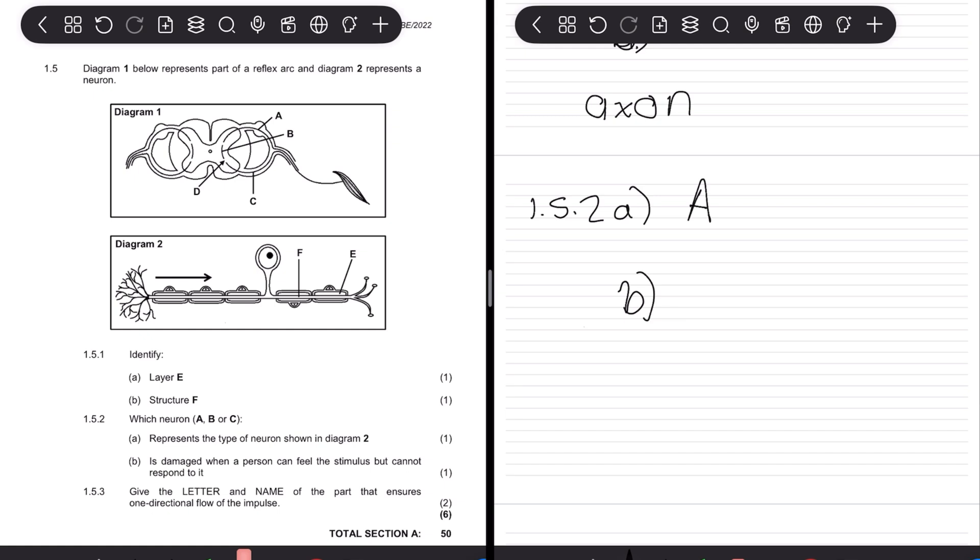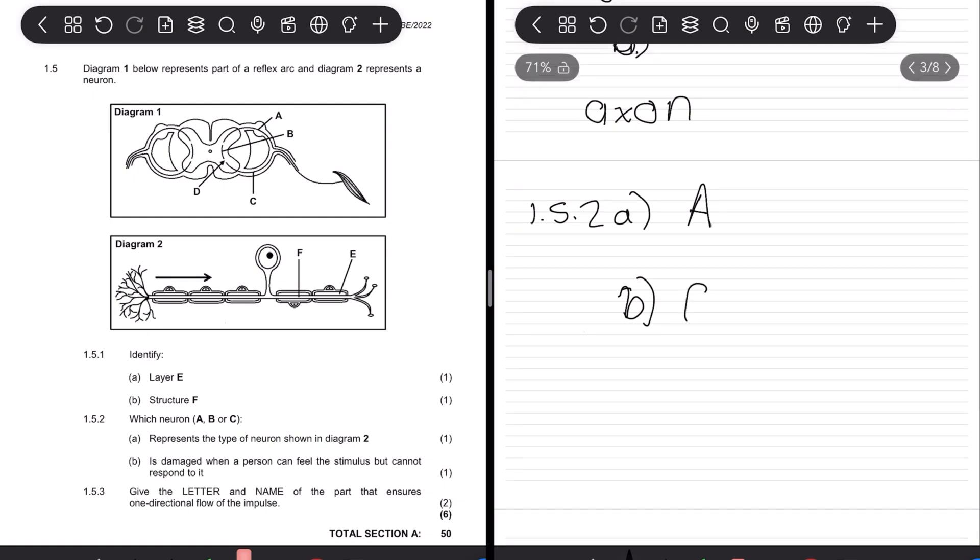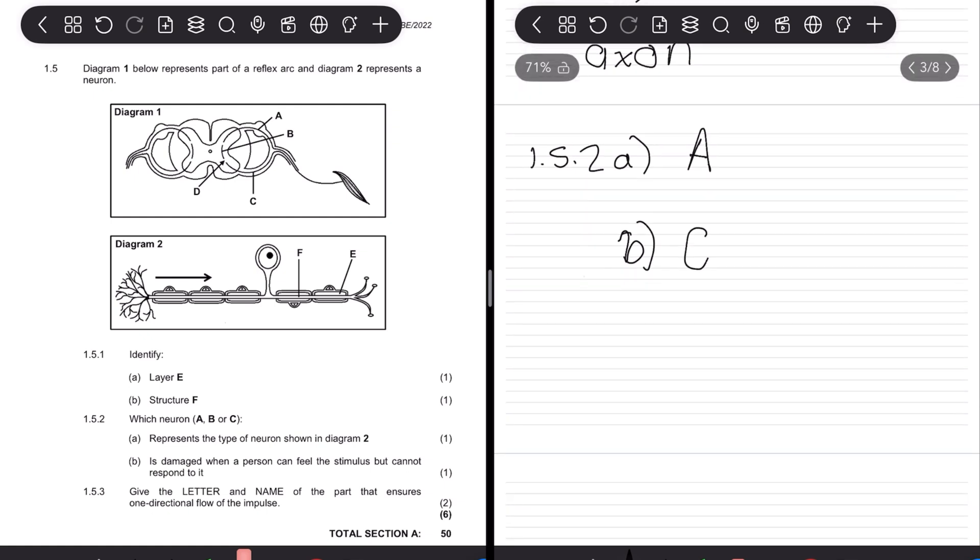1.5.3: Which structure is damaged if a person can feel the stimulus but cannot respond? Right, so this one could be damaged and a person can feel the stimulus, or sensory is in place, but cannot respond to it. But cannot respond to it, that means they've lost the motor neurons. So the motor cannot respond, so that will be the one in between. Yes, it's a motor neuron, so the sensory neuron can feel but cannot respond to it, would then be our motor neuron. Does that kind of make sense? Because our motor neuron helps us to be able to respond.